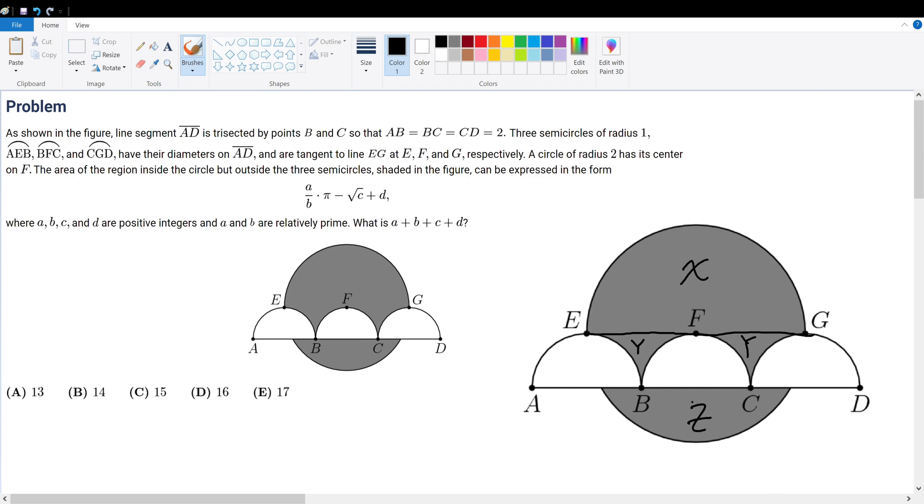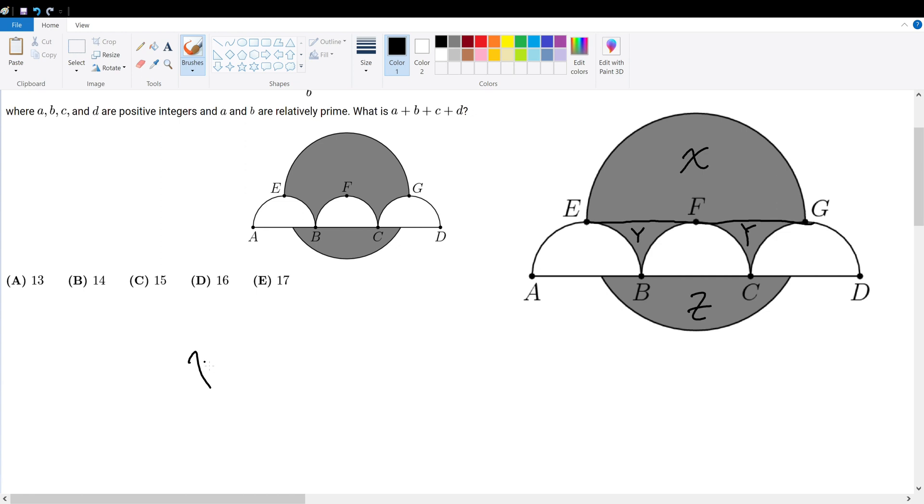So what is the area of region X? Well, region X is just half of the entire circle area with a radius of 2. So that's half times pi times 4, which is 2 pi.